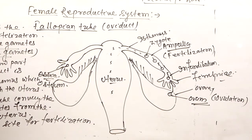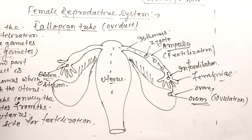The middle part is the widened part called the ampulla. Ampulla is the site for fertilization — the union of male and female gametes. Then a narrow part called the isthmus is connected with the upper part of the uterus.